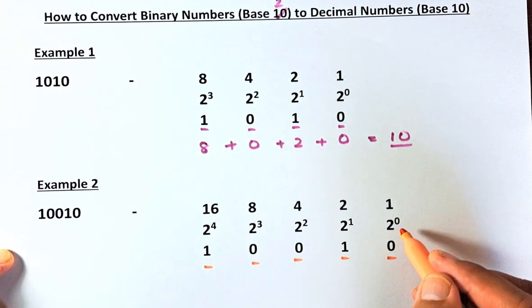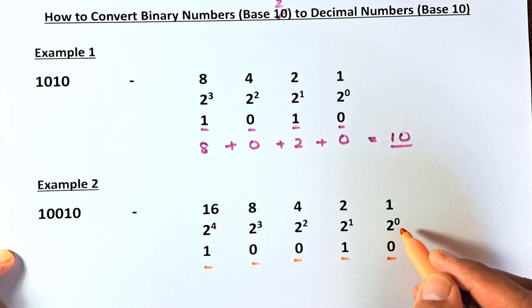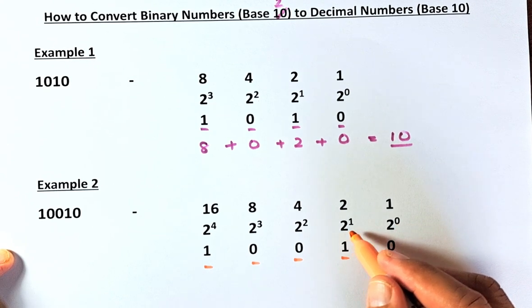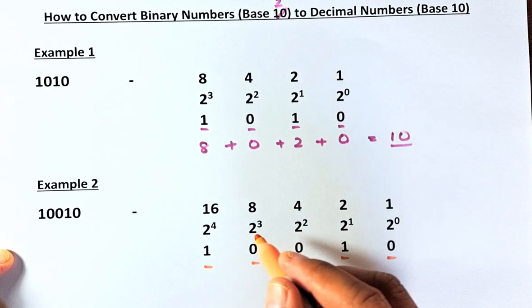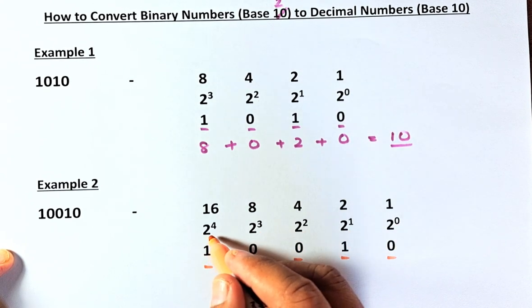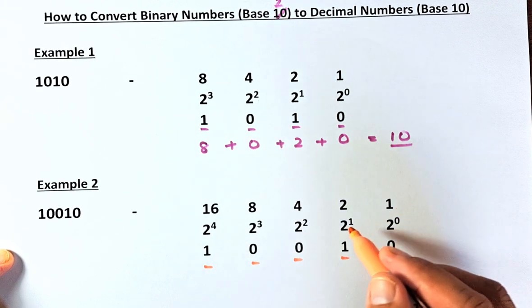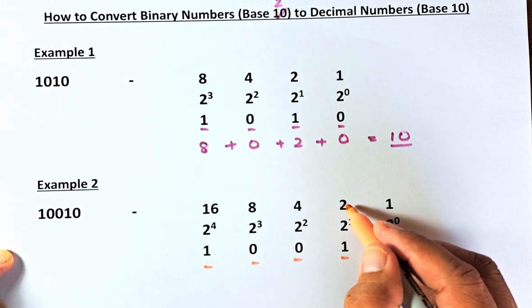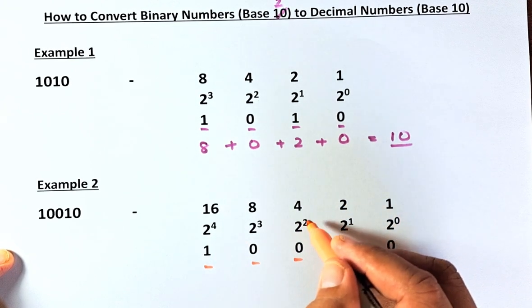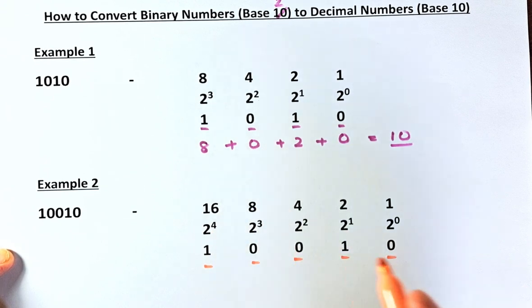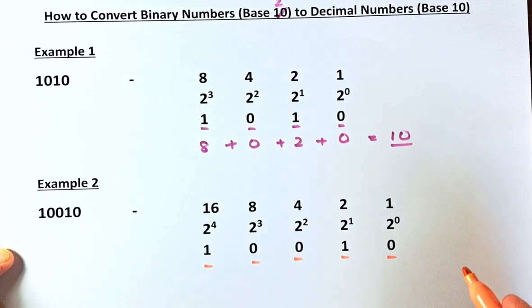The last digit is going to be 2 power 0, followed by 2 power 1, 2 power 2, 2 power 3, and 2 power 4. Then: 2 power 0 is 1, 2 power 1 is 2, 2 squared is 4, 2 cubed is 8, and 2 power 4 is 16.